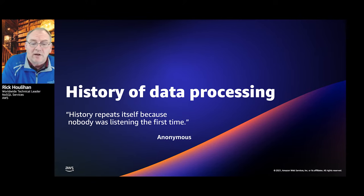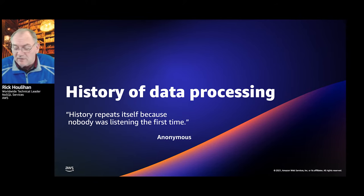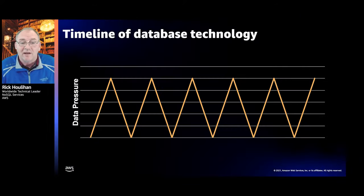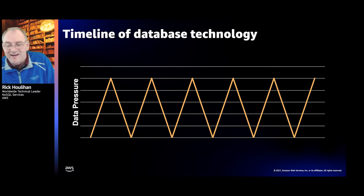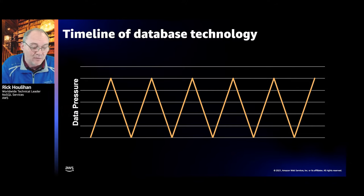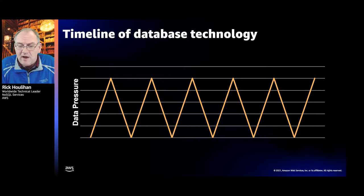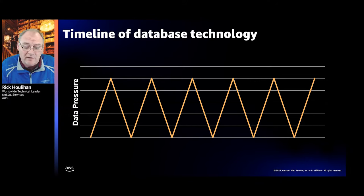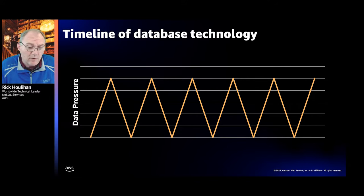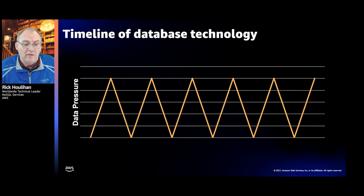The history of data processing — history repeats itself because nobody was listening the first time, and that's never been more true in the era of modern data processing. The history of data processing is really about a series of peaks and valleys in what I call data pressure: the ability of a system to manage the amount of data it's asked to process at a reasonable cost or reasonable time. When one of those dimensions is broken, that's a technology trigger, and that's typically when we start inventing things.